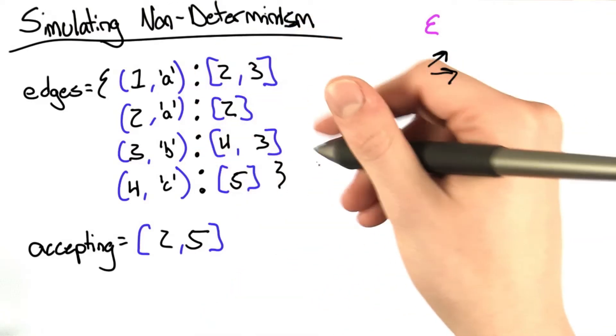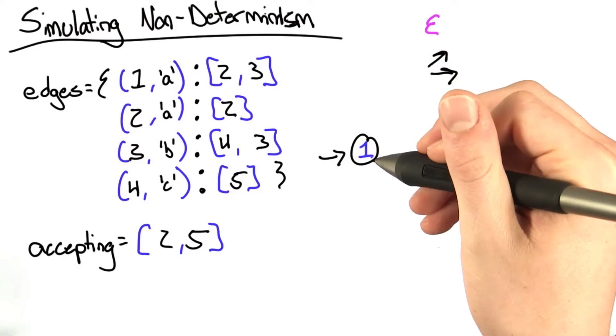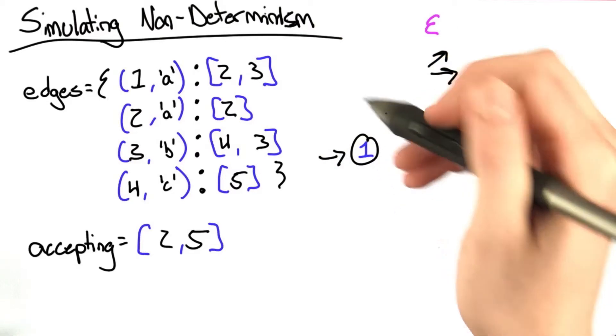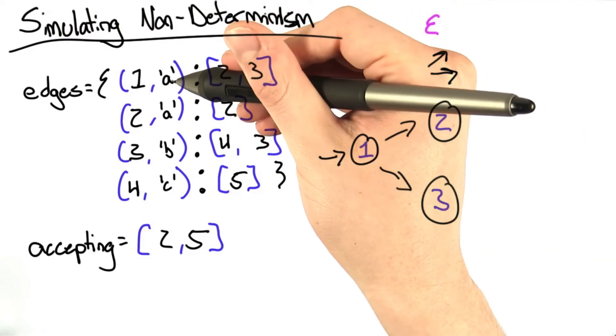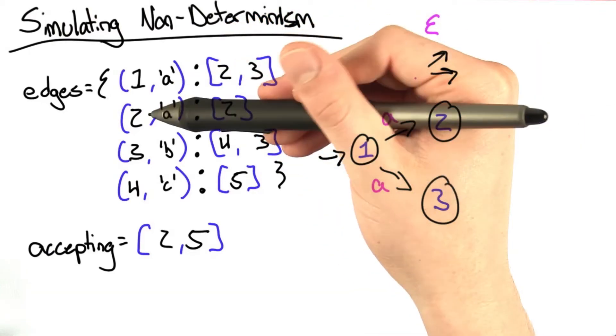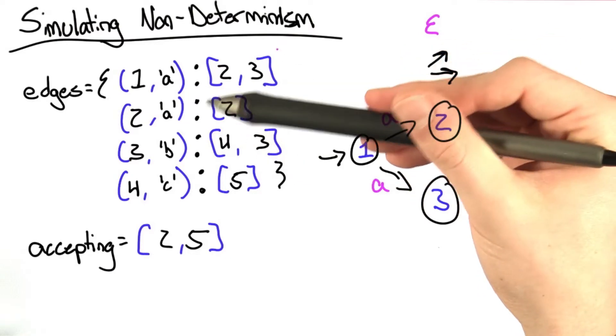Let's say we always begin at state 1, which will hold true for the remainder of our examples. So here we've been given at state 1. We then have two outgoing edges to states 2 and 3, and those are labeled with the letter A. From state 2, we have one outgoing edge to state 2, labeled with the letter A.